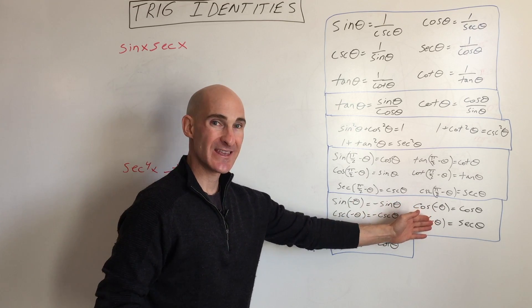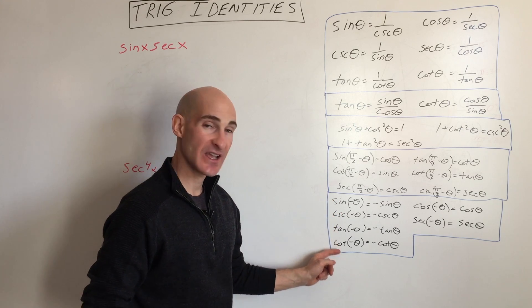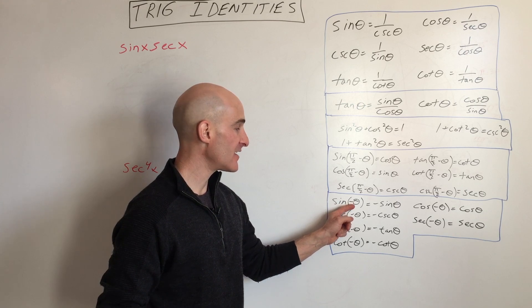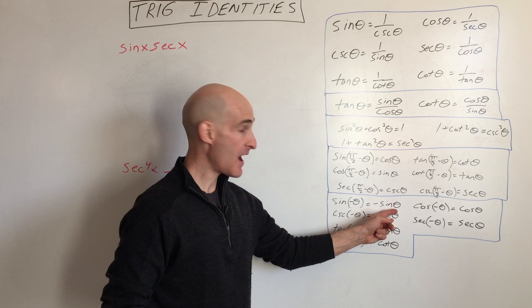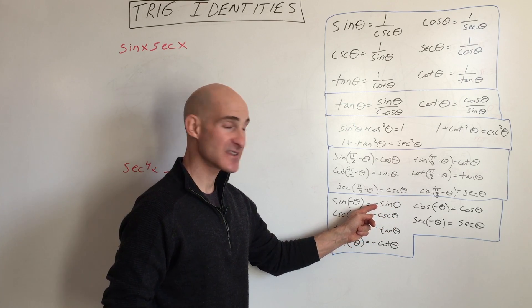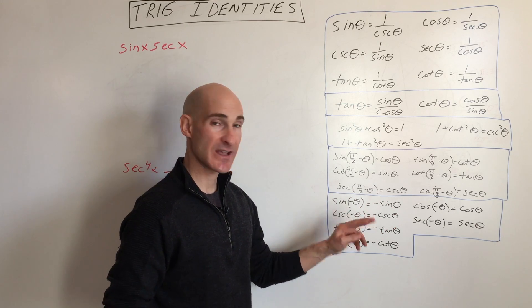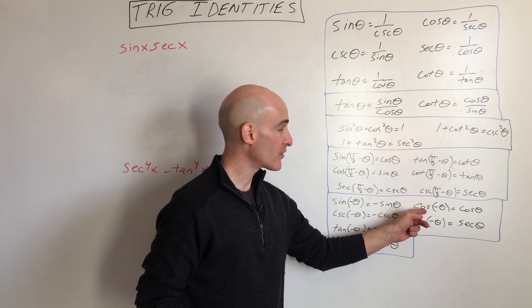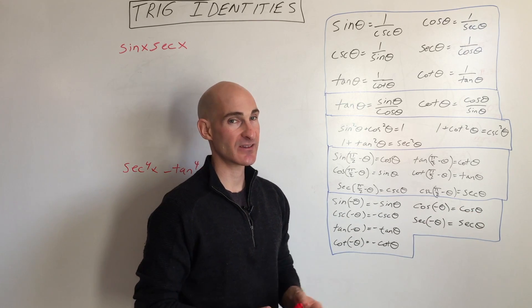These are called the even and odd identities. Sine, cosecant, tangent, and cotangent are odd. That means if you're taking the sine of a negative angle, it has the same value as the sine of a positive angle, but with the opposite sign — the negative times the negative will be positive. But cosine and secant are even, so the cosine of a negative angle will be exactly the same as the cosine of the positive angle.